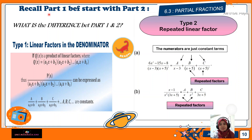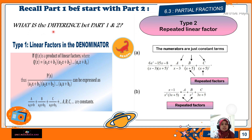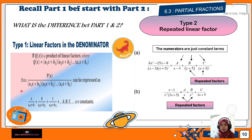So guys, how are you doing? Okay, so Part 1 is very easy, right? Now we will continue with Part 2. Before we go to Part 2, I want you to know the difference between Part 1 and Part 2. Let's recall Part 1: for Type 1, we have linear factors in the denominator. You can see here these are all linear factors — the highest power of x is x to the power of 1.